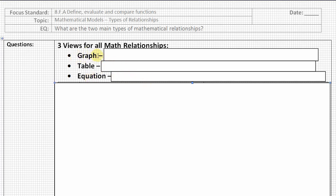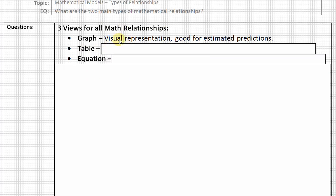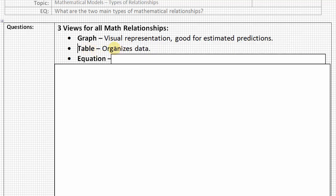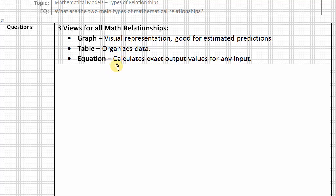So let's start with the graph. It's a visual representation, and it is a good one to use for estimating predictions. The next one, the table, is nice just to organize the data. So when you have the raw numbers, the table is a nice way to organize it. And then the equation, writing an equation, allows us to calculate exact output values for any input.